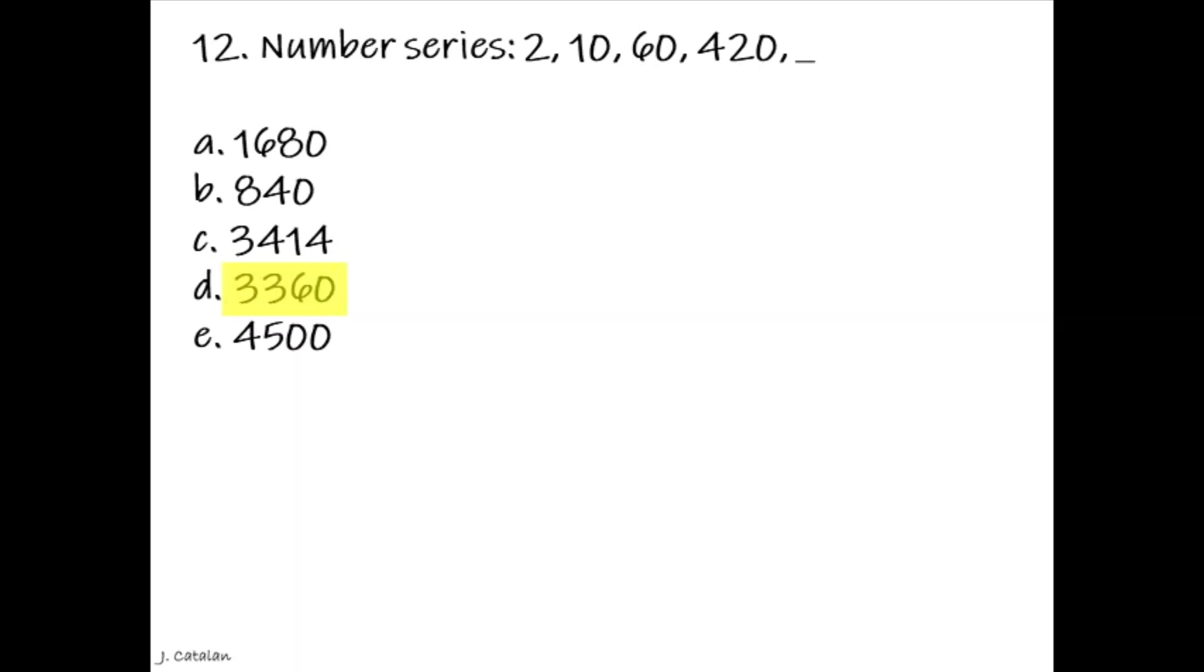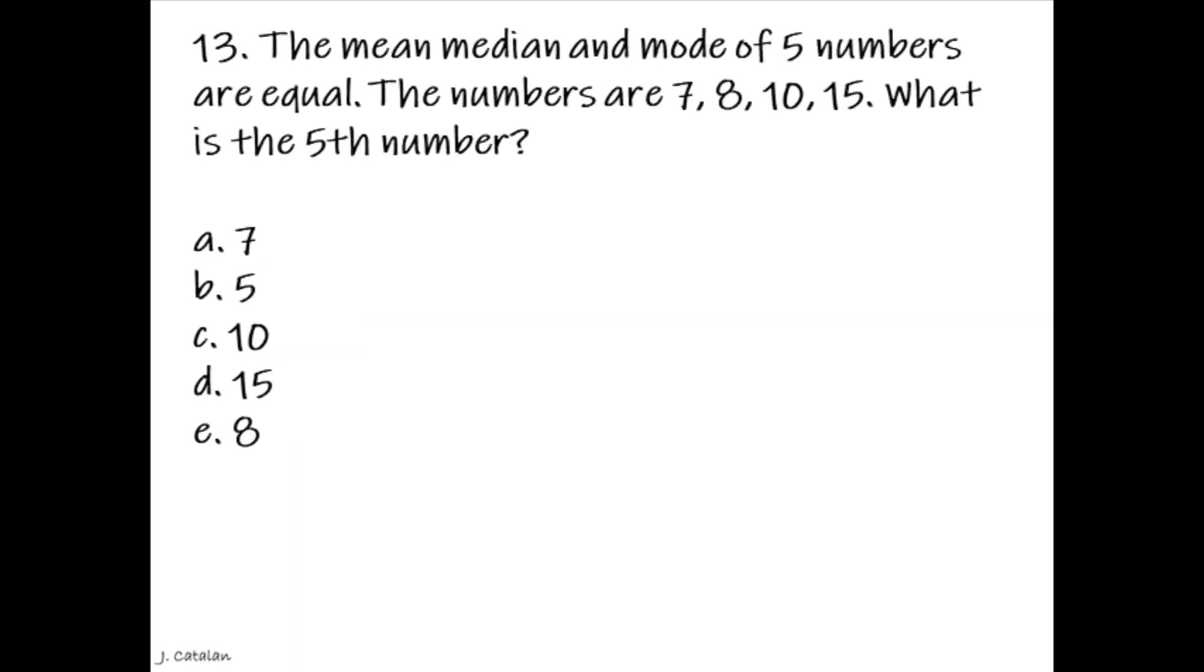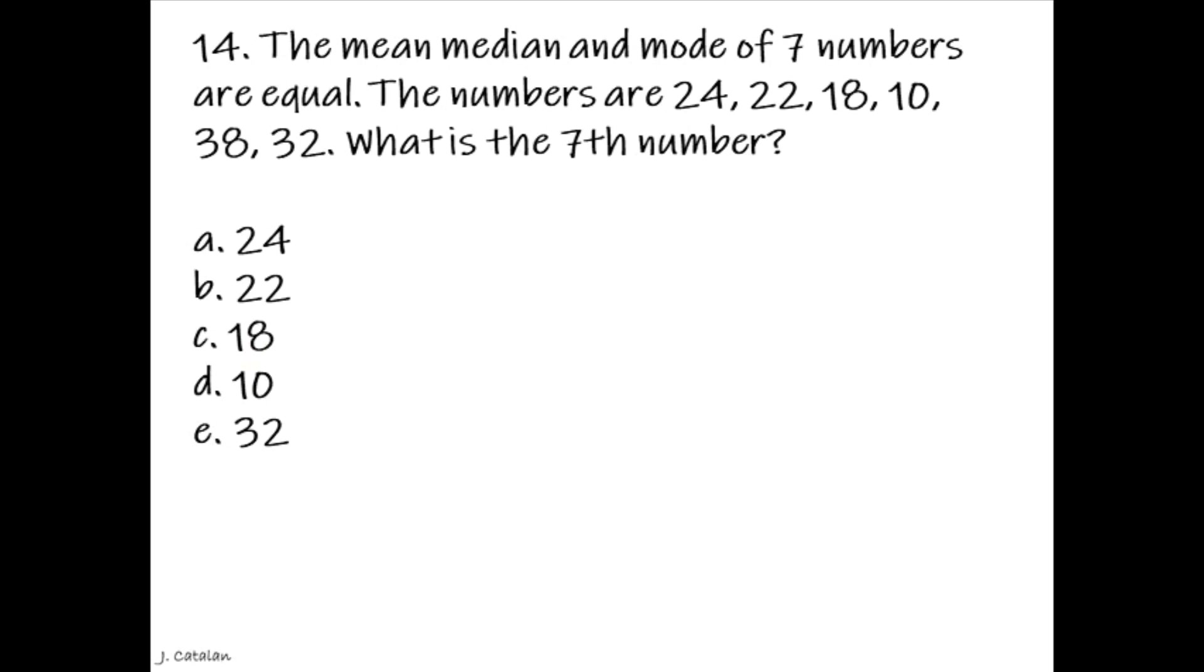Question: The mean, median, and mode of five numbers are equal. The numbers are 7, 8, 10, 15. What is the fifth number? Answer: 10. Question: The mean, median, and mode of seven numbers are equal. The numbers are 24, 22, 18, 10, 38, 32. What is the seventh number? Answer: 24.